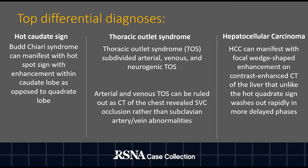Top differential diagnoses include the hot caudate sign, thoracic outlet syndrome, and hepatocellular carcinoma. The hot caudate sign, seen in Budd-Chiari syndrome, can manifest with enhancement within the caudate lobe as opposed to the quadrate lobe. Thoracic outlet syndrome can be divided into three categories — arterial, venous, and neurogenic. Arterial and venous thoracic outlet syndrome can be ruled out as CT of the chest reveals superior vena cava occlusion rather than subclavian artery or vein abnormalities.